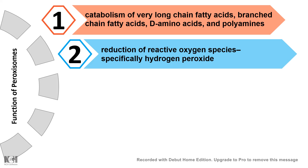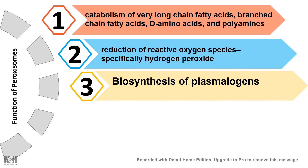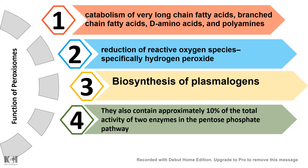Secondly, the reduction of reactive oxygen species takes place in the peroxisome, because the peroxisome has an important enzyme known as catalase — we will look at that in detail in a moment. Other than that, biosynthesis of plasmalogen happens in the peroxisome, and plasmalogen is very important for our nervous system, especially for our neurons. Additionally, approximately 10% of the total enzymatic activity important for the pentose phosphate pathway happens in the peroxisome, as key enzymes of that pathway are present there.